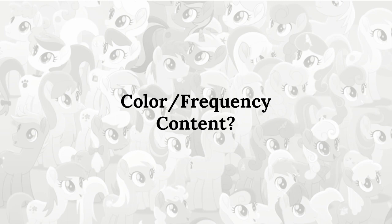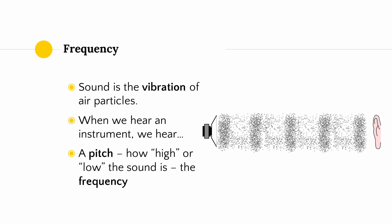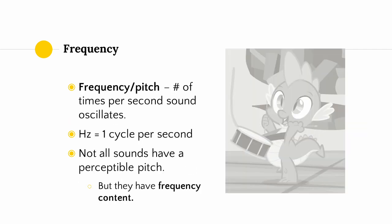The last of the aspects of sound that we can adjust is color or frequency content. What do I mean by frequency content? Sound is the vibration of air particles. When we hear an instrument producing a sound, we hear a pitch. What we perceive as pitch — how high or low the sound is — is called the frequency. Physically, the frequency is the number of times per second that a wave of sound oscillates. The units of frequency are hertz, one cycle per second.